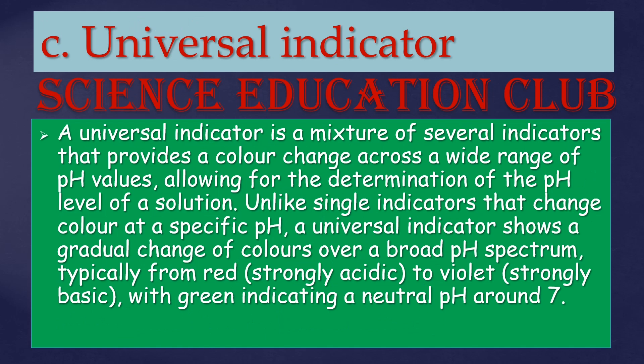Universal indicator: a universal indicator is a mixture of several indicators that provide a color change across a wide range of pH values, allowing the determination of the pH level of a solution. Unlike single indicators that change color at a specific pH, a universal indicator shows a gradual change of colors over a broad pH spectrum, typically from red to violet, with green indicating a neutral pH around 7.